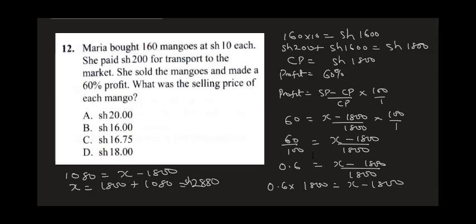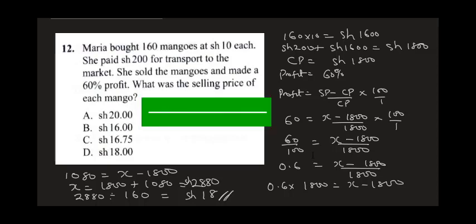To find the selling price per mango, divide 2880 by 160, which gives 18 shillings. So each mango was sold for 18 shillings.